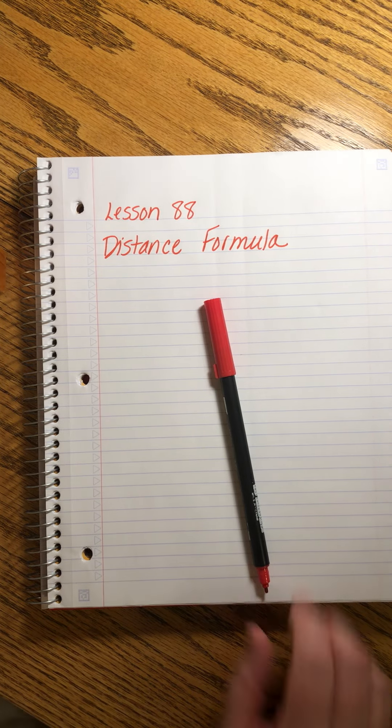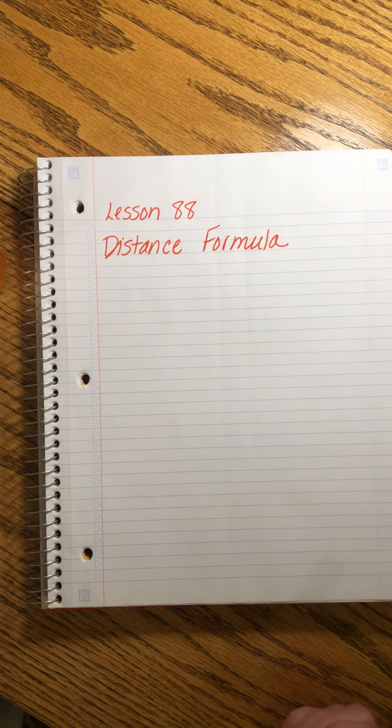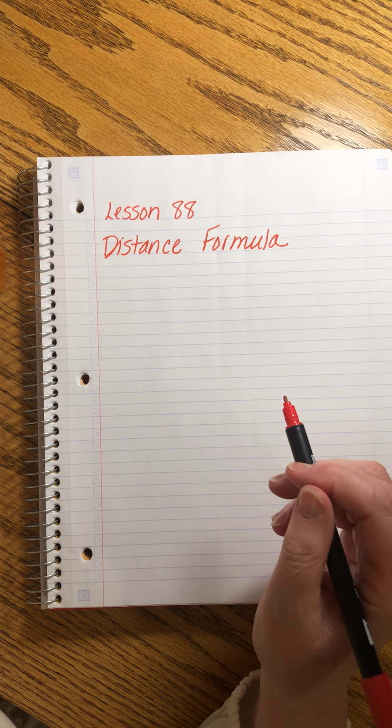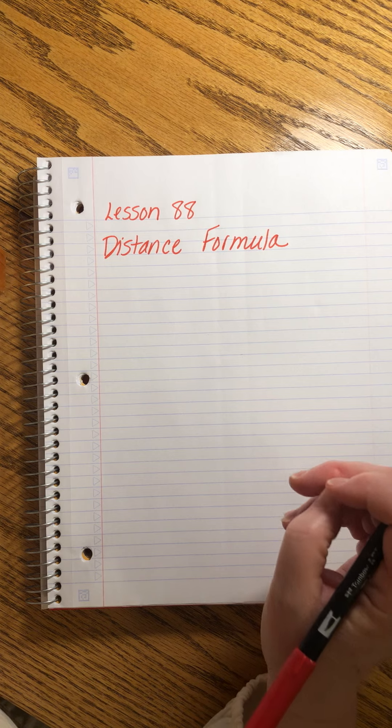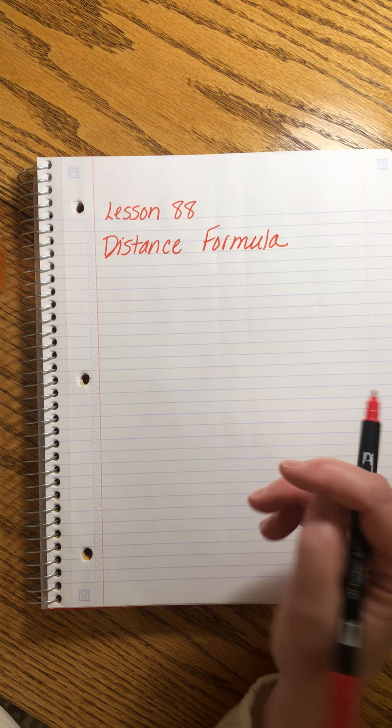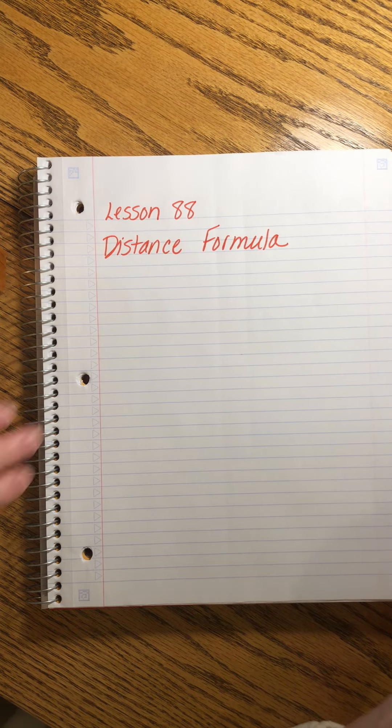Saxon Algebra 2 Lesson 88 Distance Formula is the first half of our lesson today and this is a fun formula because what we're basically doing is taking two older familiar formulas and we're putting them together to make a new one.